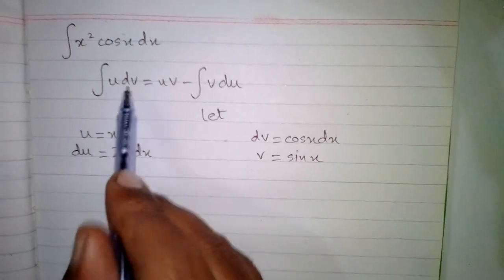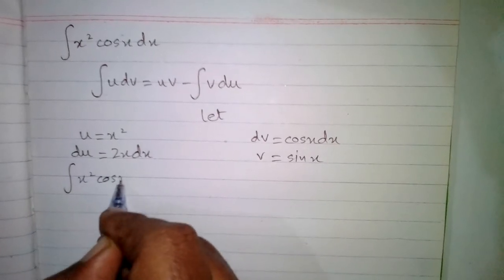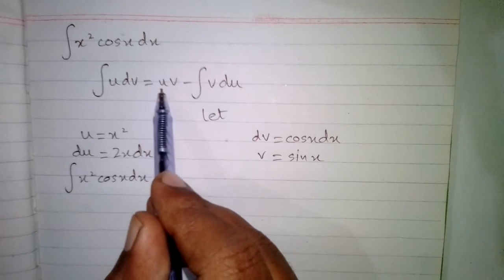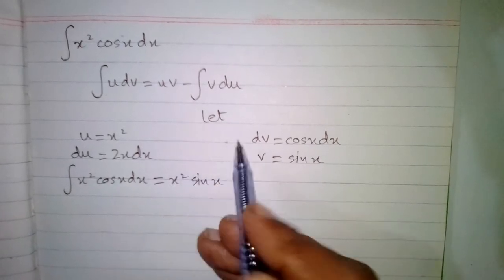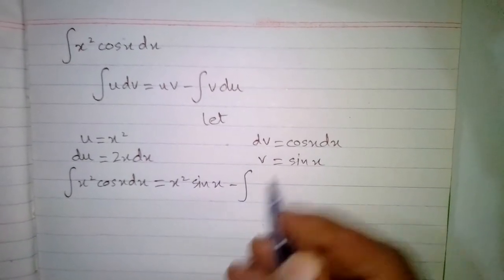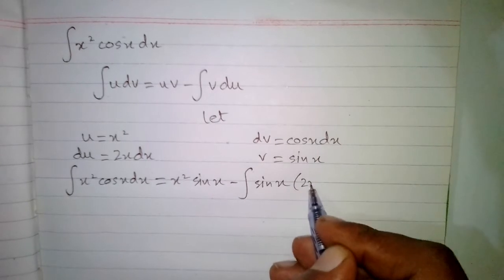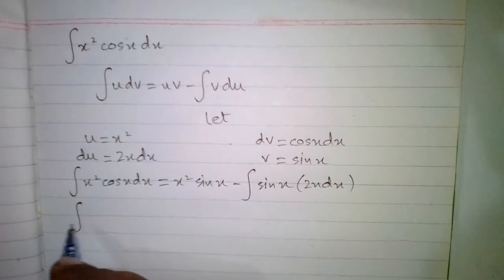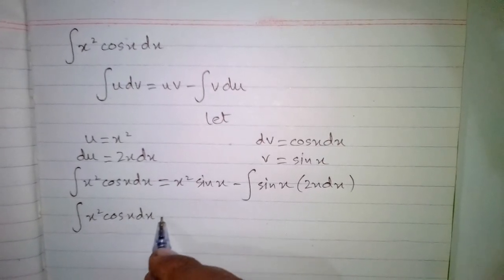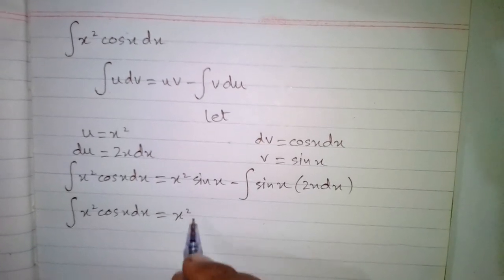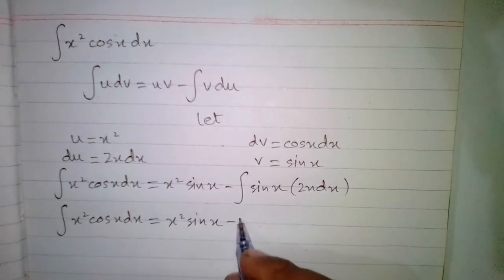Now we put the values of u, v, and du into the integration by parts formula. So the integral of x squared cos x dx equals x squared sin x minus the integral of v du, where v is sin x and du is 2x dx. We can write this as x squared sin x minus 2 times the integral of x sin x dx.